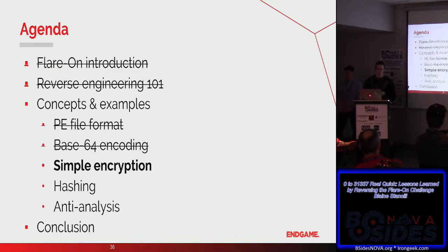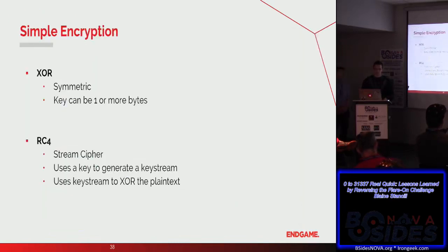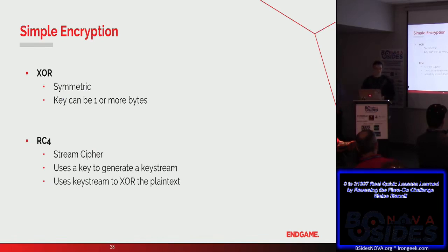Now let's talk about simple encryption. Encryption was employed quite heavily throughout the challenge. The main forms used were XOR and RC4. XOR encryption is a simple symmetric form — the same key can both encrypt and decrypt. The key can be one or more bytes. RC4 is a step up: it takes a key, generates a key stream, and then XORs your data using that key stream. The key stream can be arbitrarily long, so your key doesn't have to match the data length.